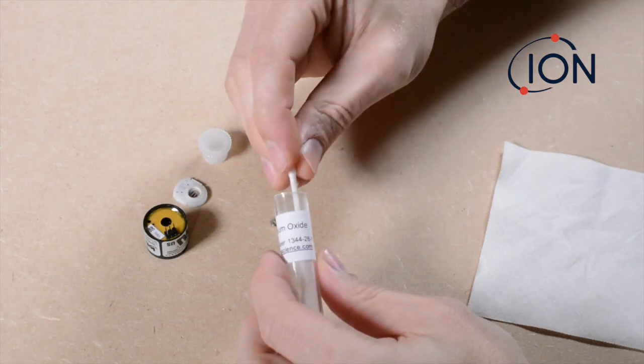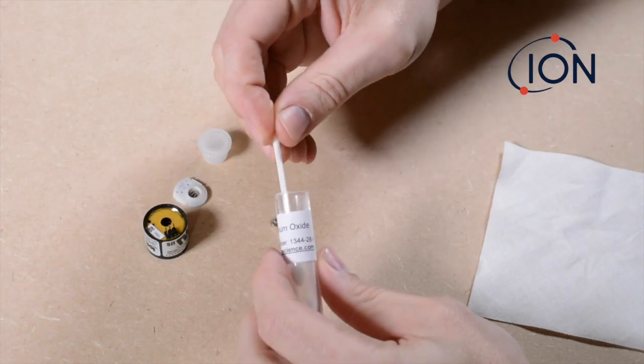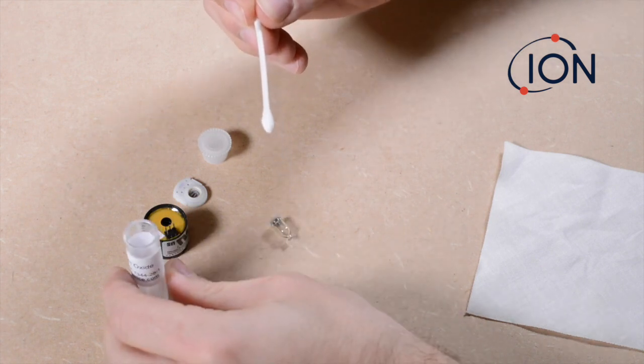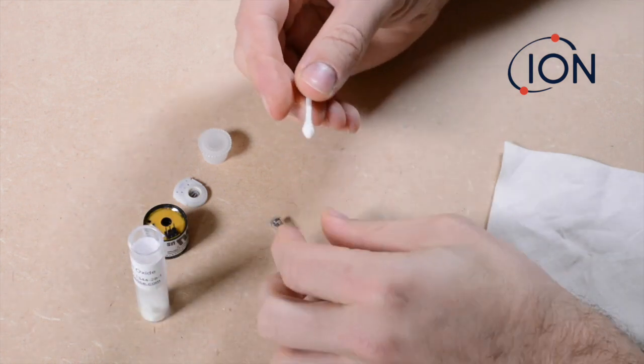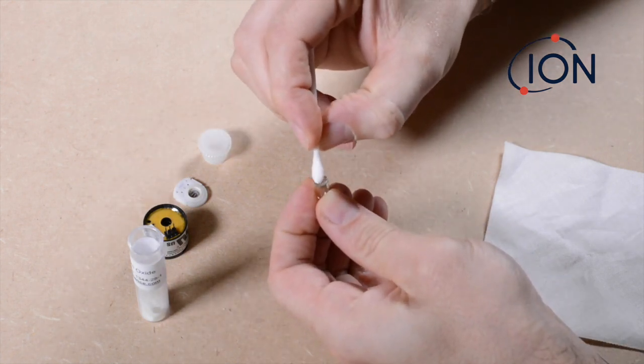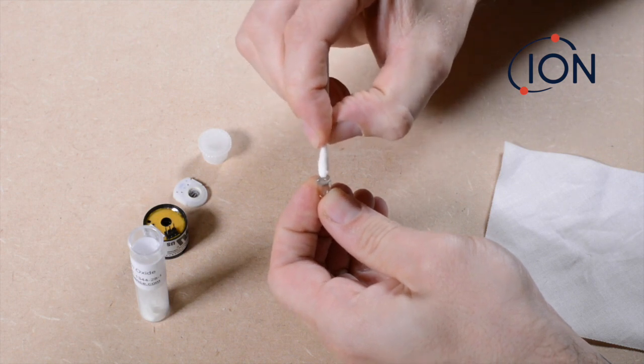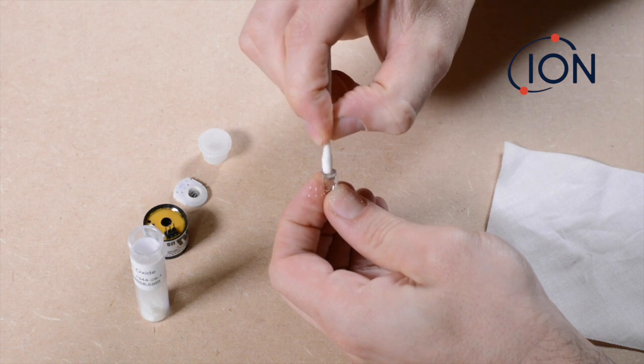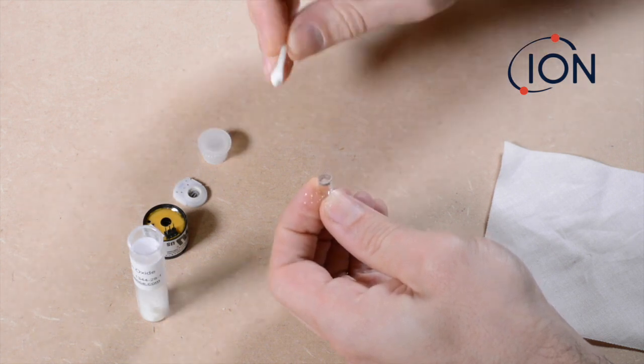Dip a clean cotton bud into the aluminum oxide cleaning powder and lightly tap off any excess. Press the tip of the powdered cotton bud firmly onto the window of the lamp and rotate in circular movements.